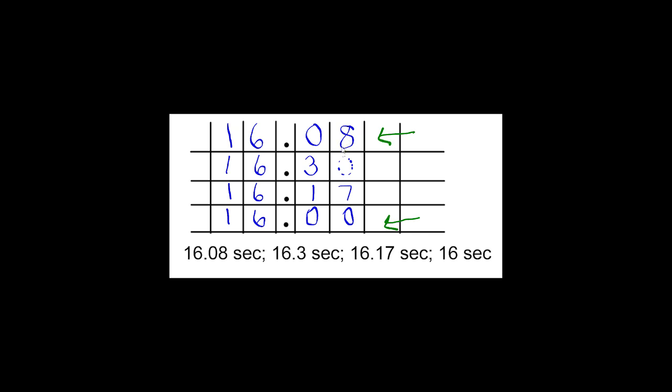I have an eight with this number in the hundredths place versus a zero in this number in the hundredths place. And so since zero is less than eight, I have identified my least value. So my least value is going to be the 16 and zero hundredths, or 16.